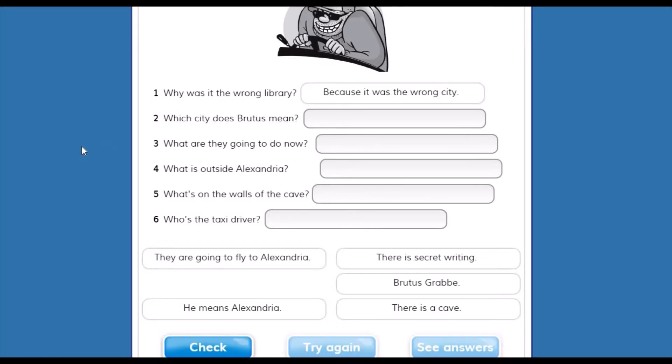Number two. Which city does Brutus mean? ¿A qué ciudad se refería Brutus? They are going to fly Alexandria. He means Alexandria. There is a secret writing. Brutus grave. There is a cave. He means Alexandria.